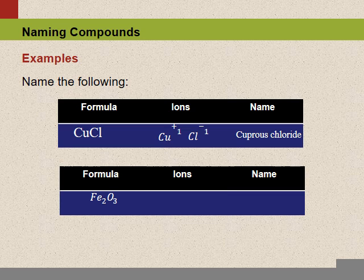For a second example, let's look at Fe2O3. Uncrossing the ions, we find iron is three-plus and oxygen is minus two. Since we're talking about the iron three-plus version, we're talking about the 'ic' version, so we call this ferric oxide.